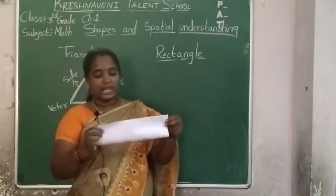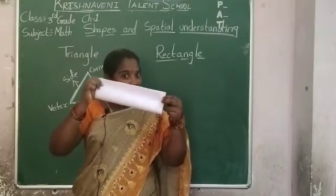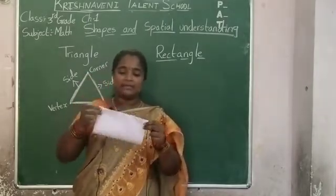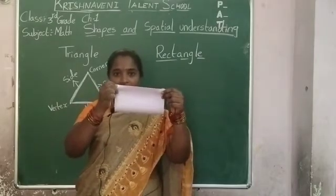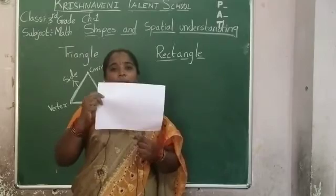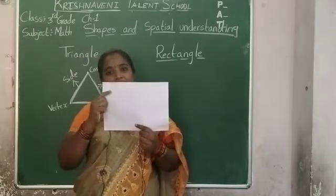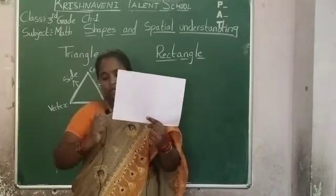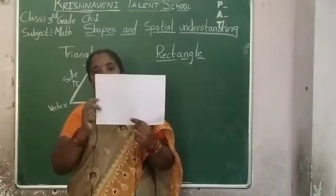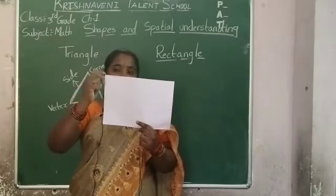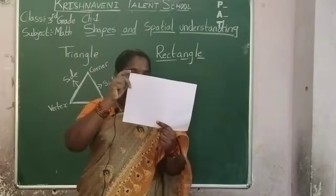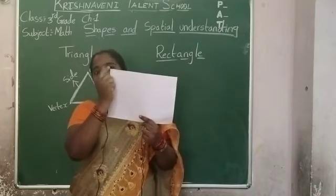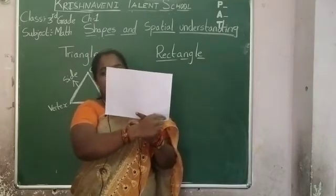Both have the same length. These two are the opposite sides, not adjacent sides. This side and this side also have the same length. So in a rectangle, opposite sides are equal. Now, how many corners are there? One, two, three, four — four corners. What is the opposite corner of this corner? If you join opposite corners, you get a line segment called a diagonal.